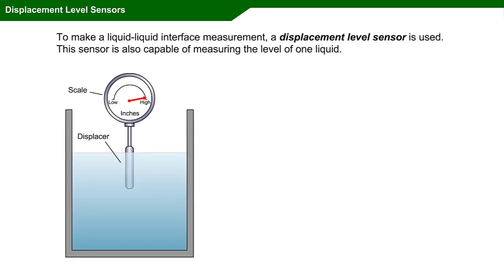To make a liquid-liquid interface measurement, a displacement level sensor is used. This sensor is also capable of measuring the level of one liquid.